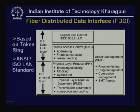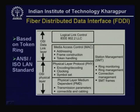First, let us focus on FDDI, which stands for Fiber Distributed Data Interface. It is based on token ring and is supported by the ANSI/ISO LAN standard. There is a close relationship between the ISO layers and the FDDI layers. The physical layer is divided into two sub-layers: one is medium independent and the other is medium dependent, since several media such as optical fiber and twisted pair can be used in FDDI.